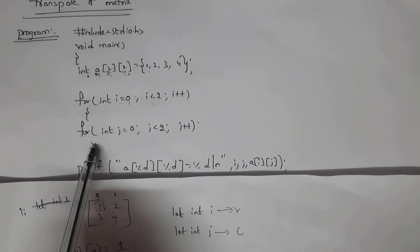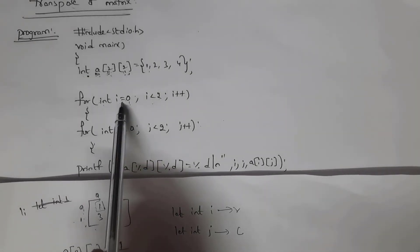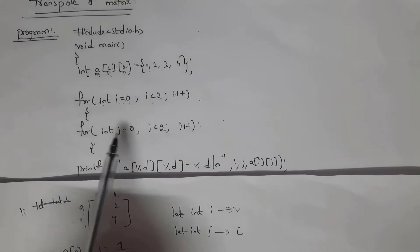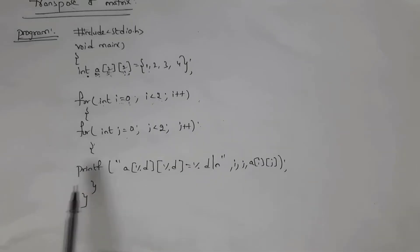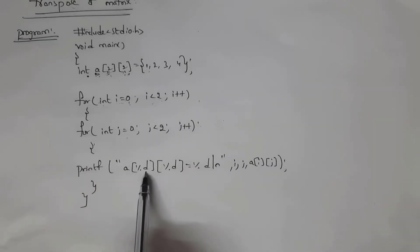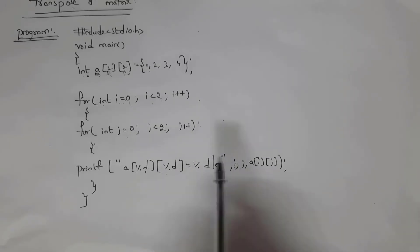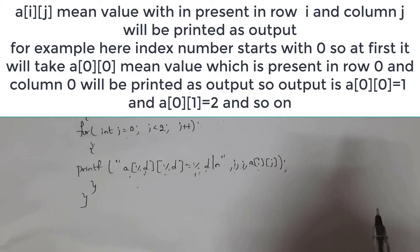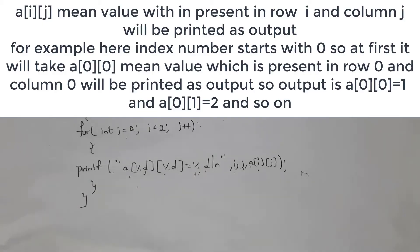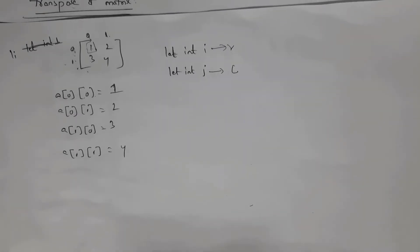I took two for loops: one for rows and one for columns. Rows and columns start with zero and end with one. I written: for(int i=0; i<2; i++) and for(int j=0; j<2; j++). Inside this I written printf with format a[%d][%d] = %d, passing i, j, and a[i][j]. By writing this I get output: a[0][0]=1, a[0][1]=2, a[1][0]=3, a[1][1]=4.